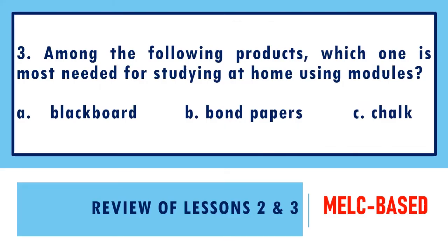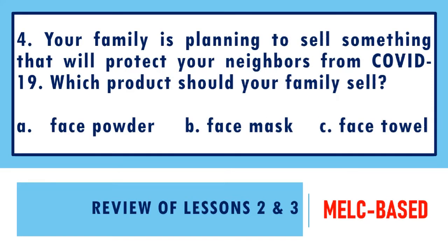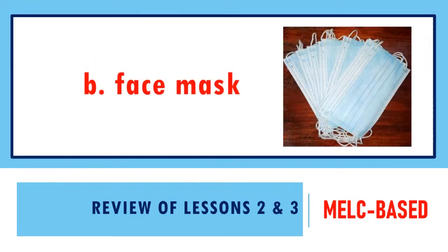Number 3. Among the following products, which one is most needed for studying at home using modules? A. Blackboard, B. Bond Papers, C. Chalk. What is your answer? If your answer is letter B, good job, you are correct. Question 4. The answer is letter B, good job, you are correct.